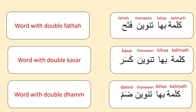Next: 'kalima bihā tanwīn fath' meaning word with double fathah, 'kalima bihā tanwīn kasr' meaning word with double kasrah, and 'kalima bihā tanwīn damm' meaning word with double dhammah. If you have any doubt about tanween, watch my previous video part 4.